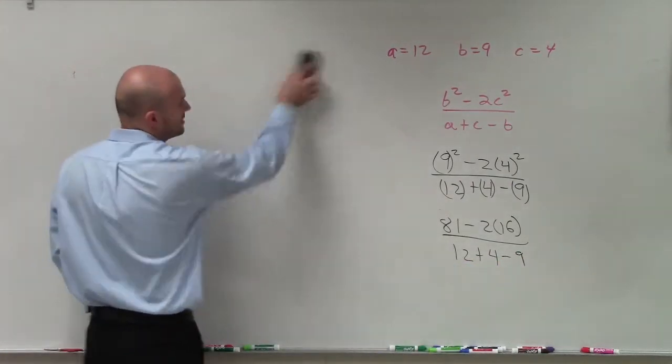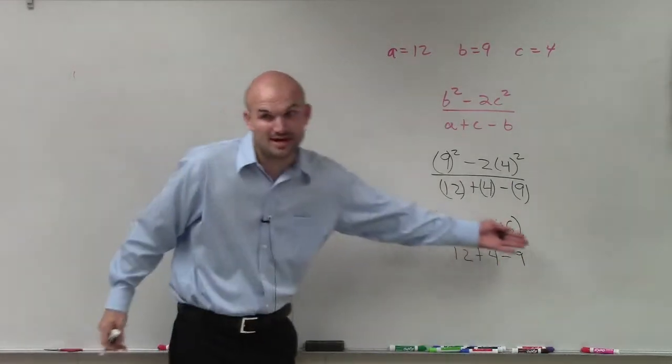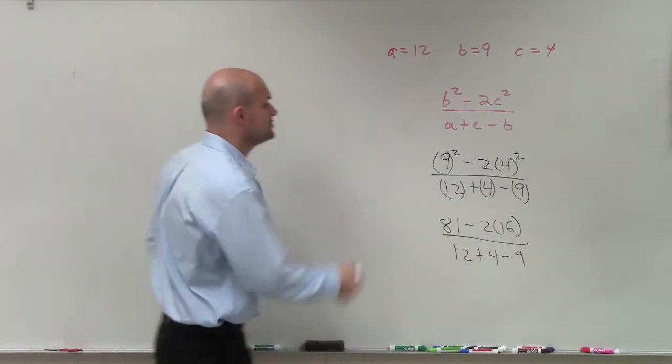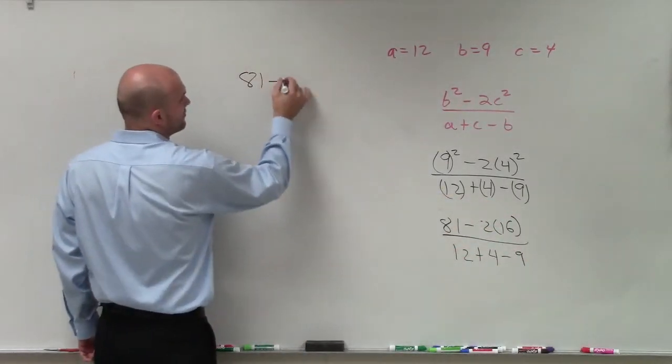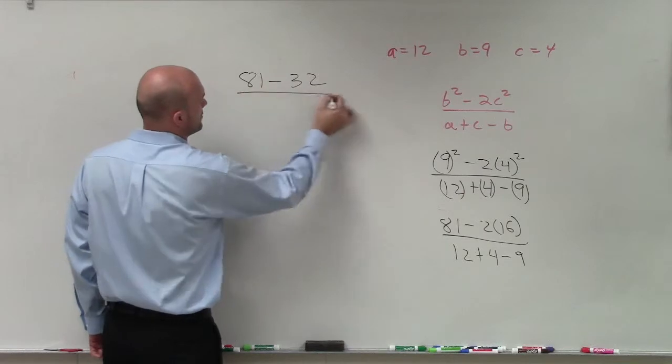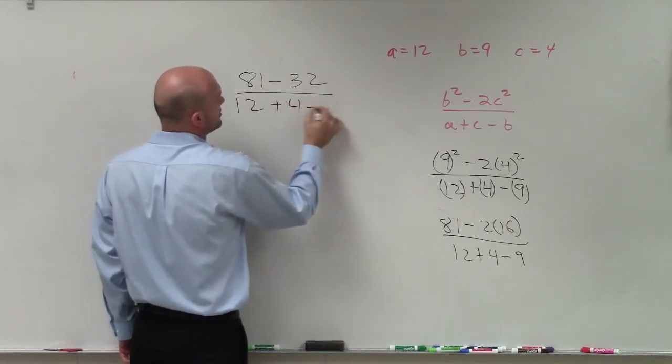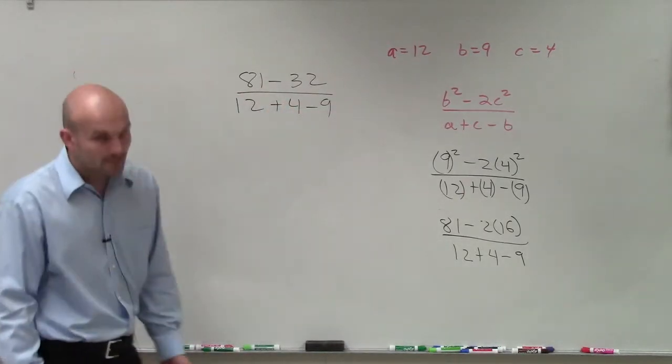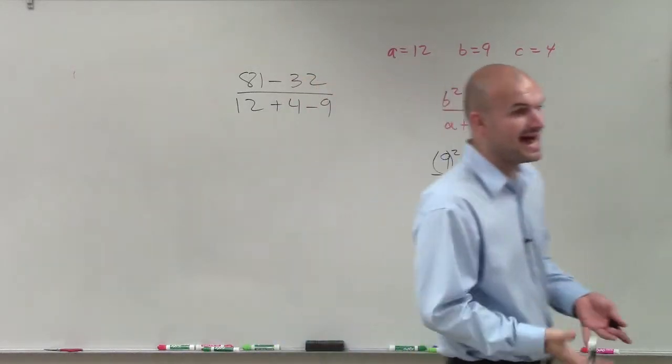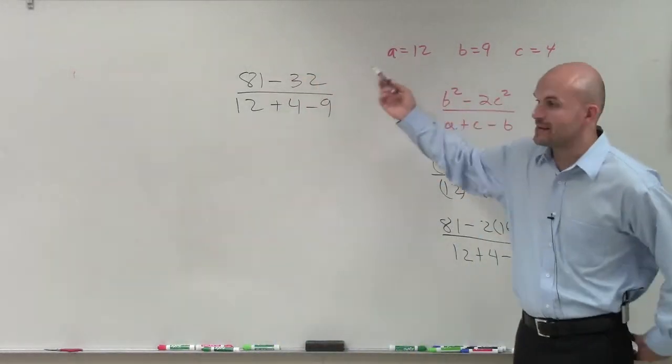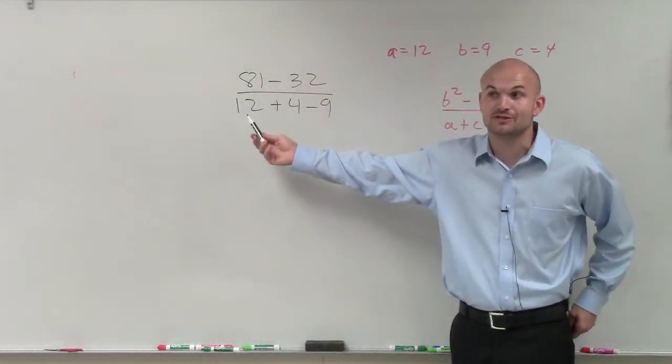I'm going to carry this over here, because the next thing I want to do is apply my multiplication. So I can do 2 times 16. So I have 81 minus 32 over 12 plus 4 minus 9. Now, what I simply need to do is just add up or combine my terms up top. And when I do add and subtract in the denominator,